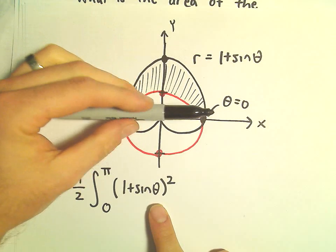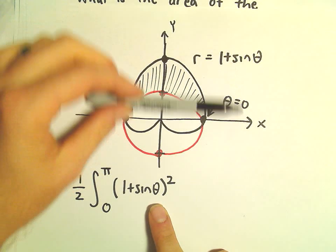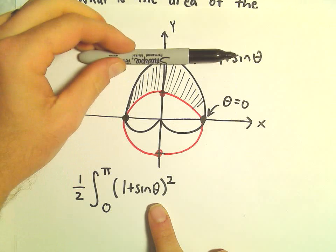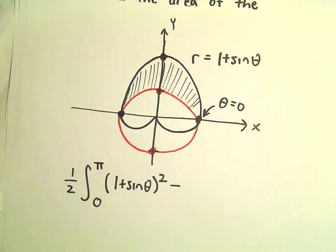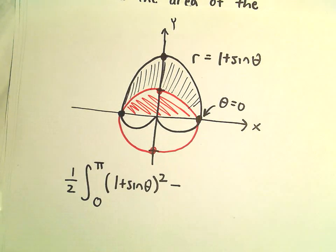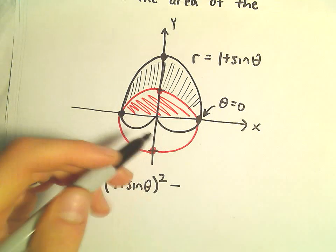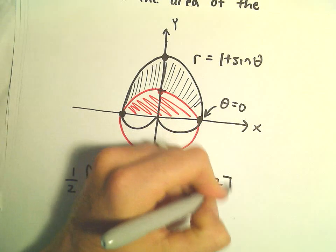So computing that, that would give us the entire area above the x-axis. That would give us the entire area above the x-axis that's bounded by 1 plus sine theta. But then we have to subtract away the area inside of the circle. So to subtract that away, we'll take that curve, which is just 1 squared. And we'll just subtract those.